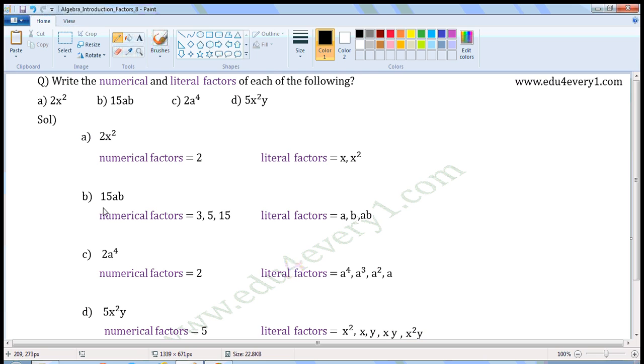Next one, 15ab. In this, the numerical coefficient is 15. Its factors are 3, 5 and 15. Literal coefficient is ab. So, literal factors are a, b and ab.